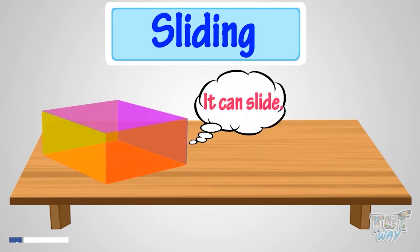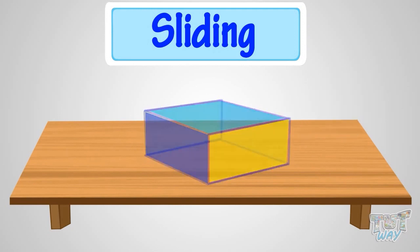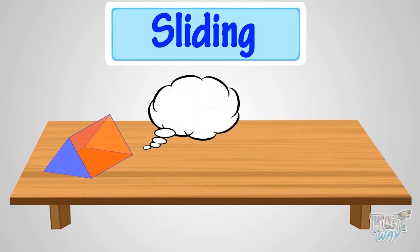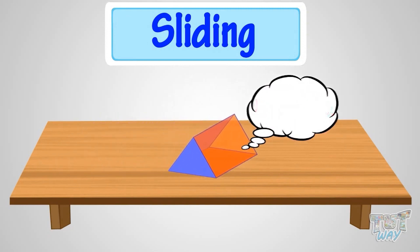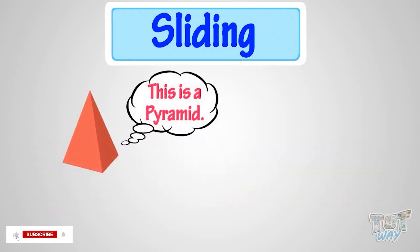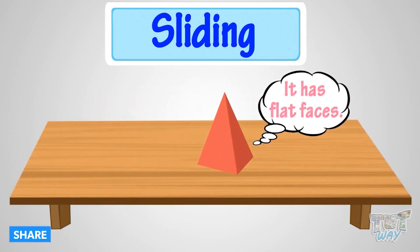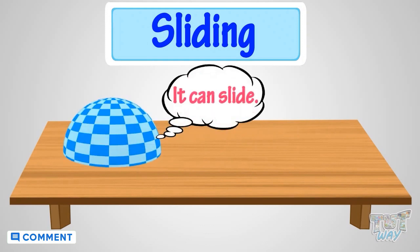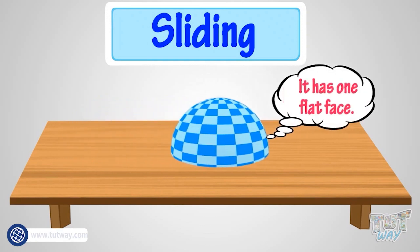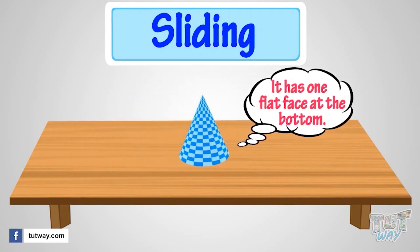This is a cuboid — it can slide as it too has all flat faces. This is a prism — it can slide as it too has all flat faces. This is a pyramid — it too can slide as it has flat faces. A hemisphere can slide as it has one flat face. A cone can also slide as it has one flat face.